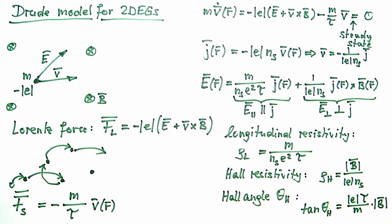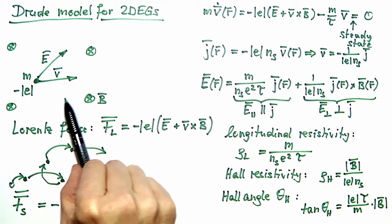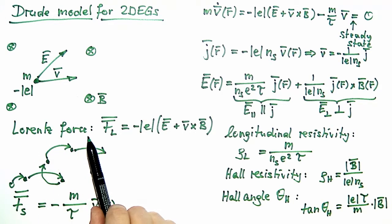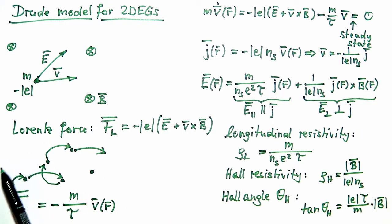In solving this problem we have seen that there are two main ingredients for the Drude model. First, the free motion of electrons under the influence of electric and magnetic fields, giving rise to a Lorentz force. Second, the scattering term, which on average gives rise to a restoring or frictional force that is proportional to velocity.